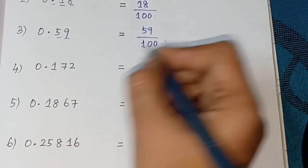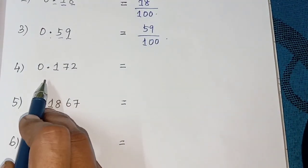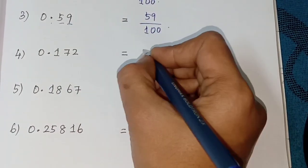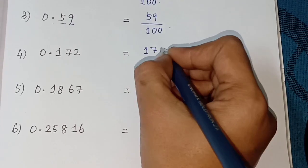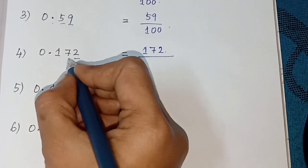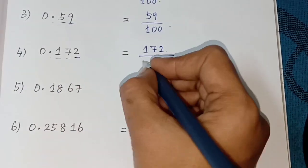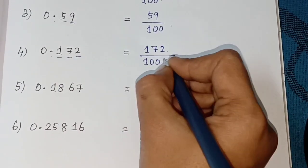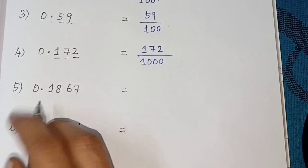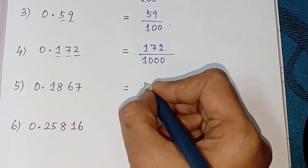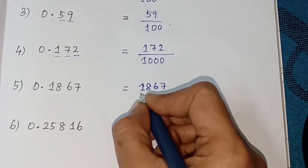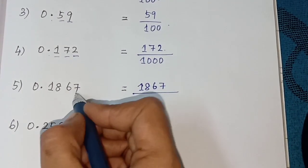Fifth one, 0.1867, a four-digit number, so 1867 divided by place value once tens 10,000. Then last one, 0.25816, question mark. Comment your answer.